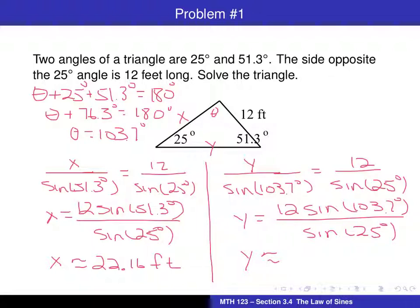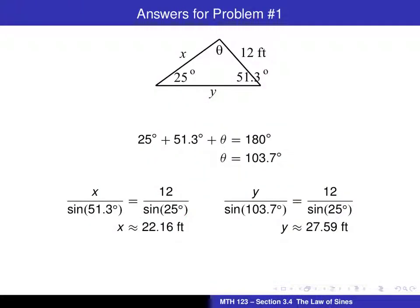Now take out the calculator and do that computation. We should get y ≈ 27.59 feet. Here's a summary of what we've done. The three unknowns are now determined. The starting point was the pair of 25 degrees and 12 feet, because we knew both the angle measure and the length of the opposite side. That allowed us to use that ratio. We first determined angle theta, then used the law of sines to find lengths x and y.